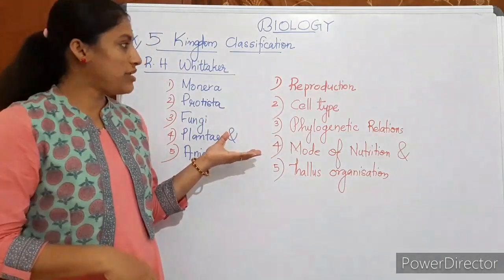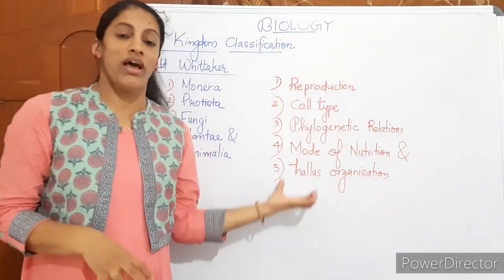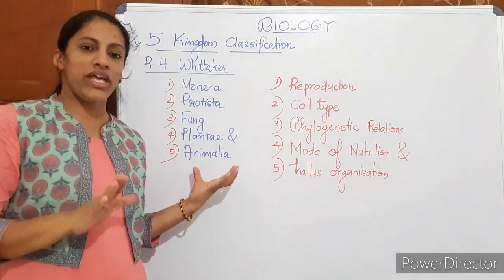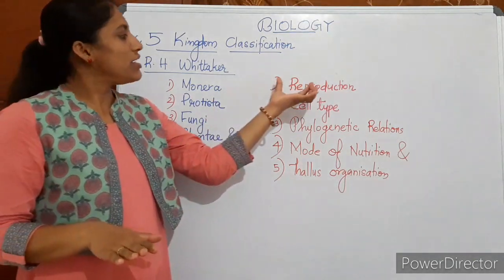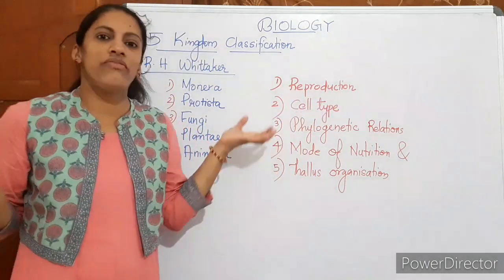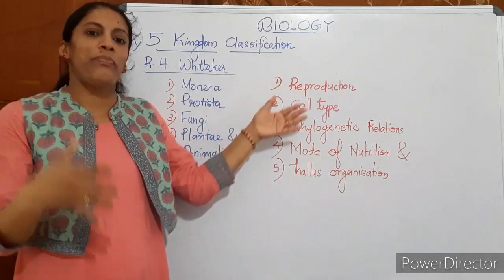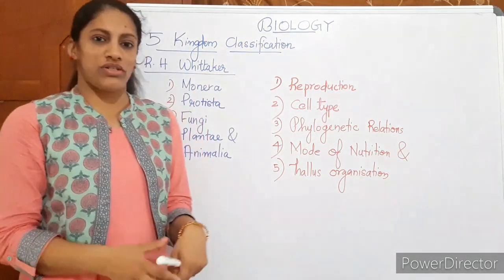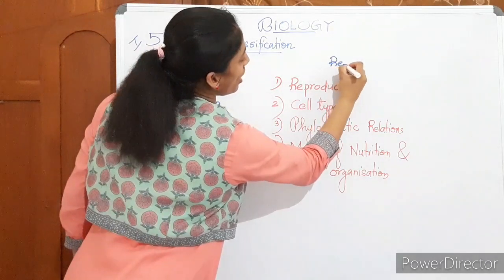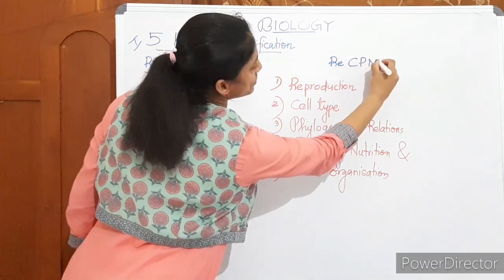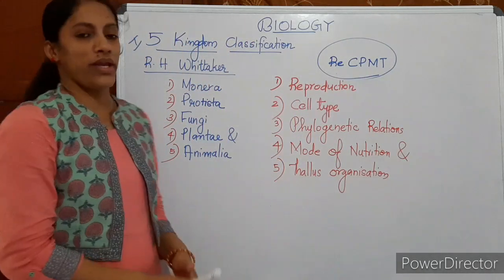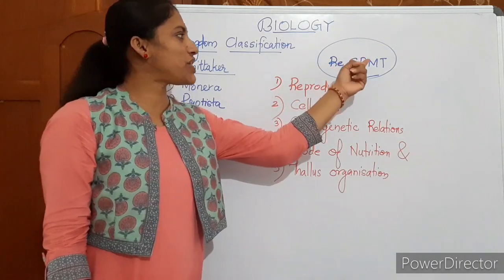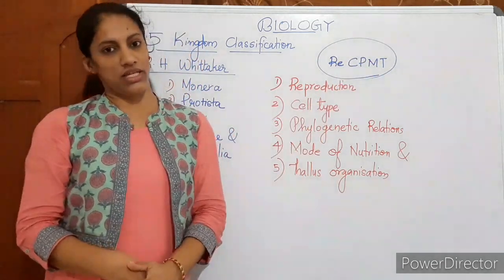So what I mean is based on these observations, these differences or similarities in detail, he has classified organisms into five different kingdoms. Then see, you have to by heart these things. Always everyone says biology, we need to by heart. Just develop a chord and study what are the features. Here I am giving an example. You can make your own chords.